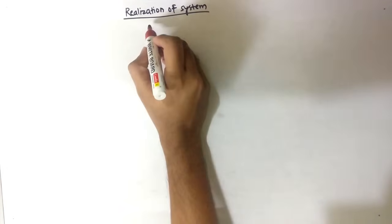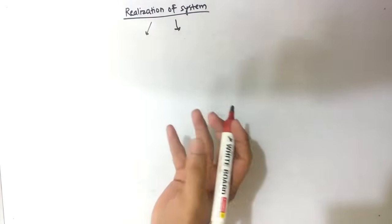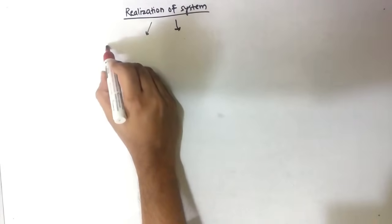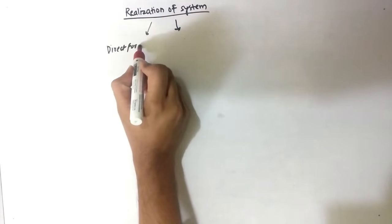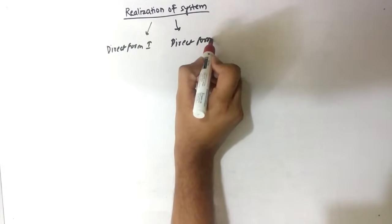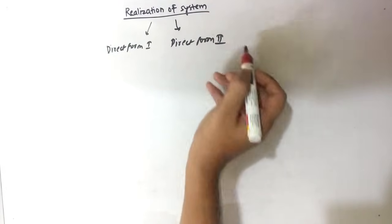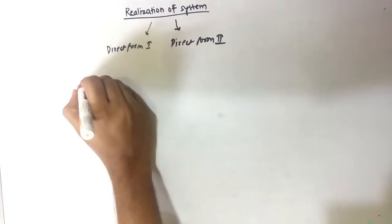Hello friends, today our topic is realization of systems. In this video we will cover two types of structures: Direct Form 1 and Direct Form 2. I will give you some tricks — like by finding H of Z, how can you directly draw the structure.